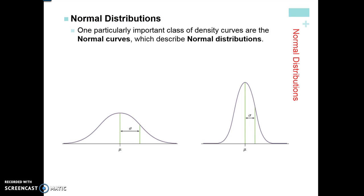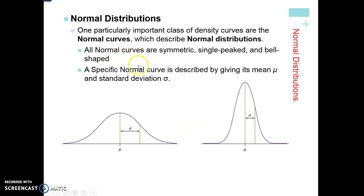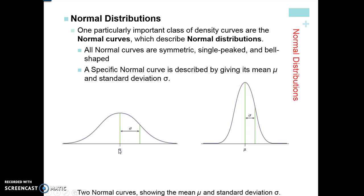Now let's take a look at normal distributions. One particularly important class of density curves is the normal curves. In this class we are 99% of the time going to look at normal curves and normal distributions rather than uniform or other distributions. What makes a normal curve special? They're all symmetric — you should be able to fold them in half and have the same shape on both sides. They have single peaks — only one maximum — and they're bell-shaped. A specific normal curve is described by its mean and standard deviation, giving a better measure of center and spread than median and IQR.